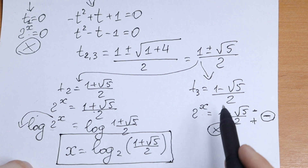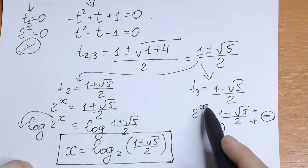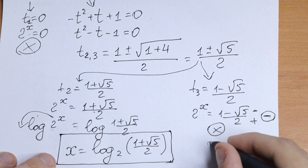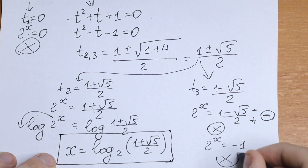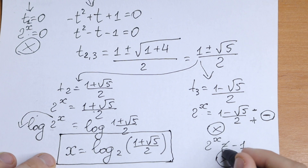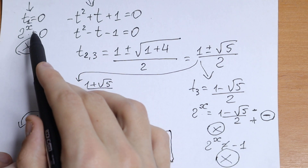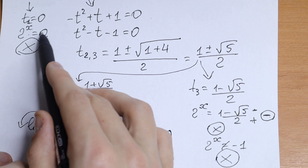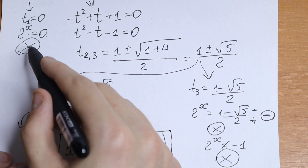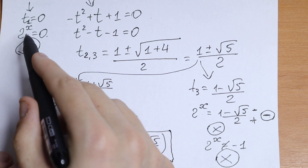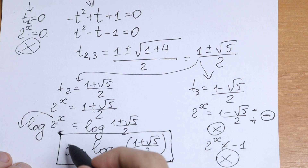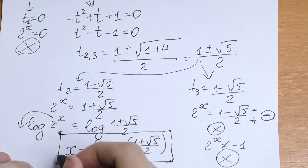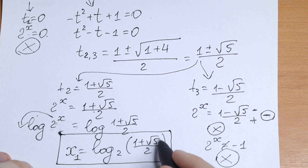This is our one and only answer. There are no other roots here because 2 to the power x cannot equal a negative value. Note that if 2 to the power x equals 0, that equation also has no solution — since the exponential function never touches 0. It approaches 0 but never reaches it. So we have only x1 equal to log base 2 of (1 plus square root of 5) over 2.